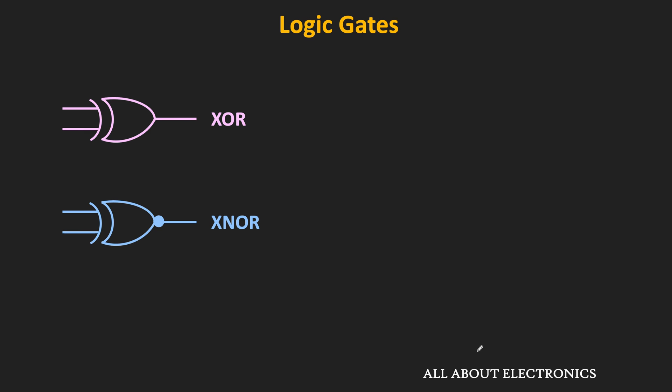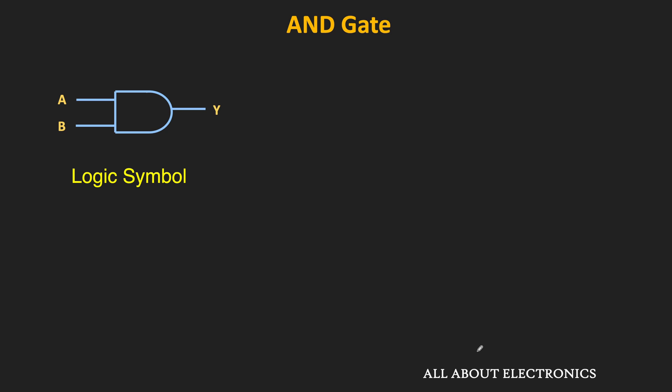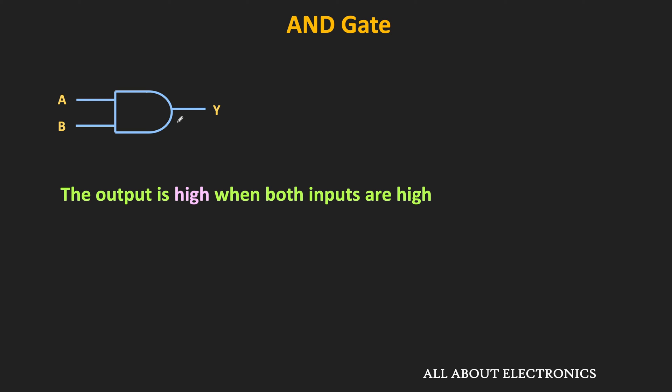Let us start with the AND gate. This is the symbol of the two-input AND gate, where A and B are the inputs and Y is the output. The output of the AND gate will be high or logic 1 when both inputs are high. If any of the two inputs is low or logic 0, the output of the AND gate will be equal to 0. The truth table shows all possible combinations of the input signals and the corresponding outputs for those combinations.